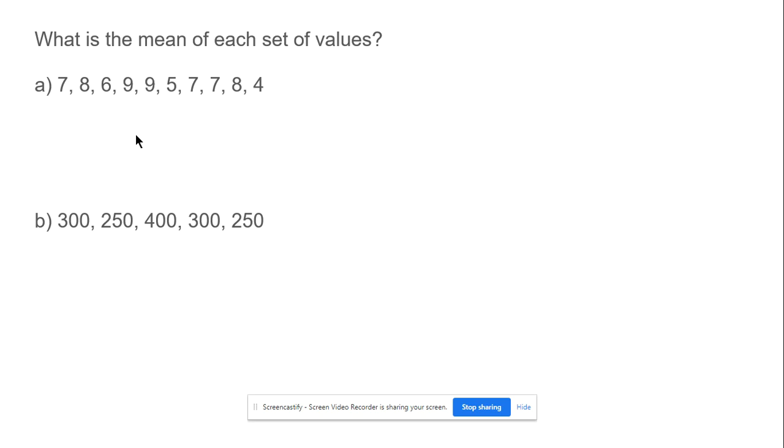For the next problem, we add: 7 + 6 + 8 + 9 + 9 + 5 + 7 + 7 + 8 + 4 = 70. That's 10 numbers total. So 70 divided by 10 equals a mean of 7.